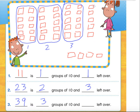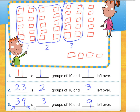And how many ones left over? We have 1, 2, 3, 4, 5, 6, 7, 8, and 9. We also know a little trick: we can look at the tens place — it has a 3, so we have three groups of 10. Then our ones place is right here, and we know we have nine left over — nine ones.